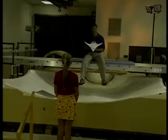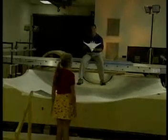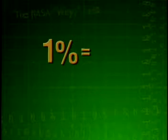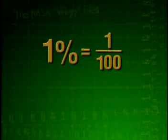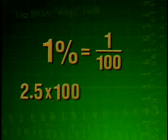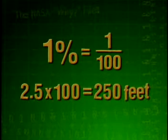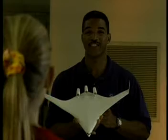By the way, if this 1% model has a wingspan of 2.5 feet, what would be the wingspan of the real airplane? He doesn't know that I'm a math whiz too. That's easy. 1% equals 1/100, so you just multiply 2.5 by 100, and you get 250. You would do great at making a model.